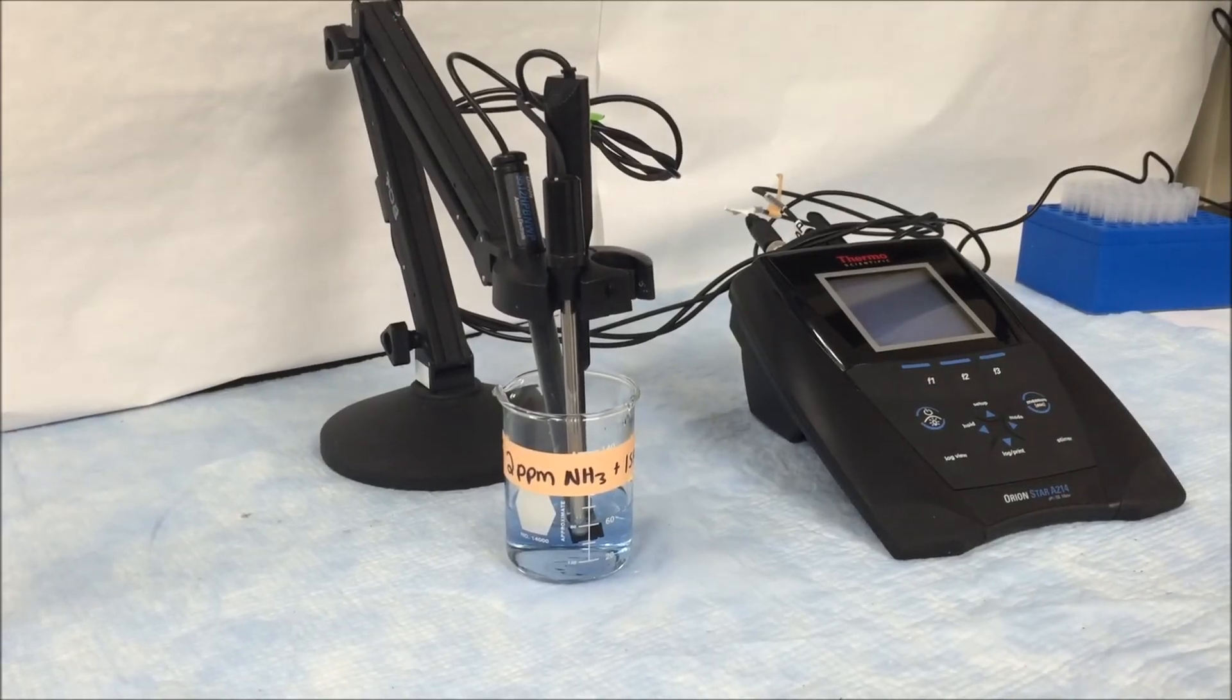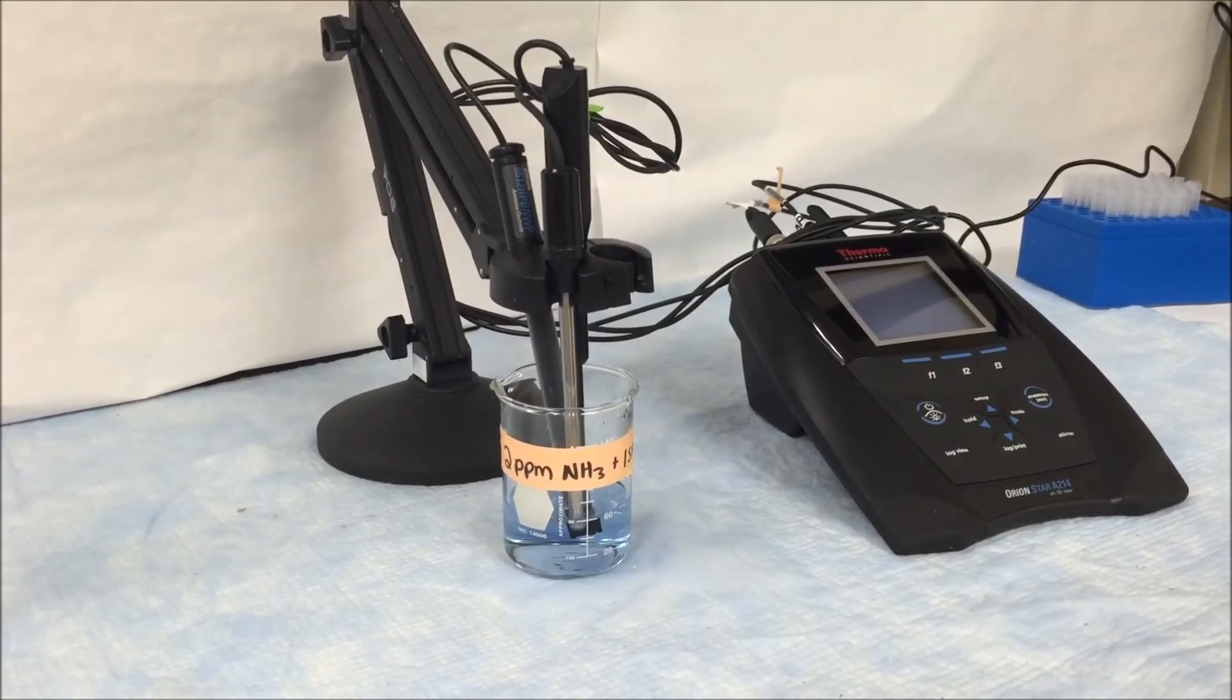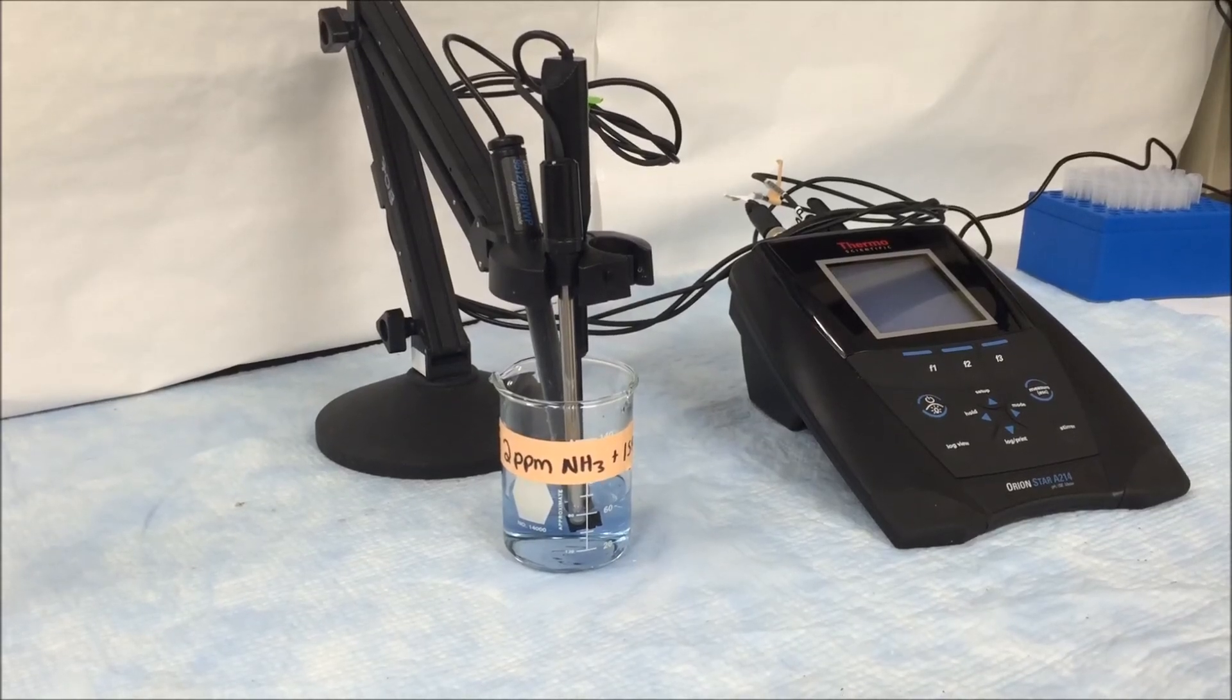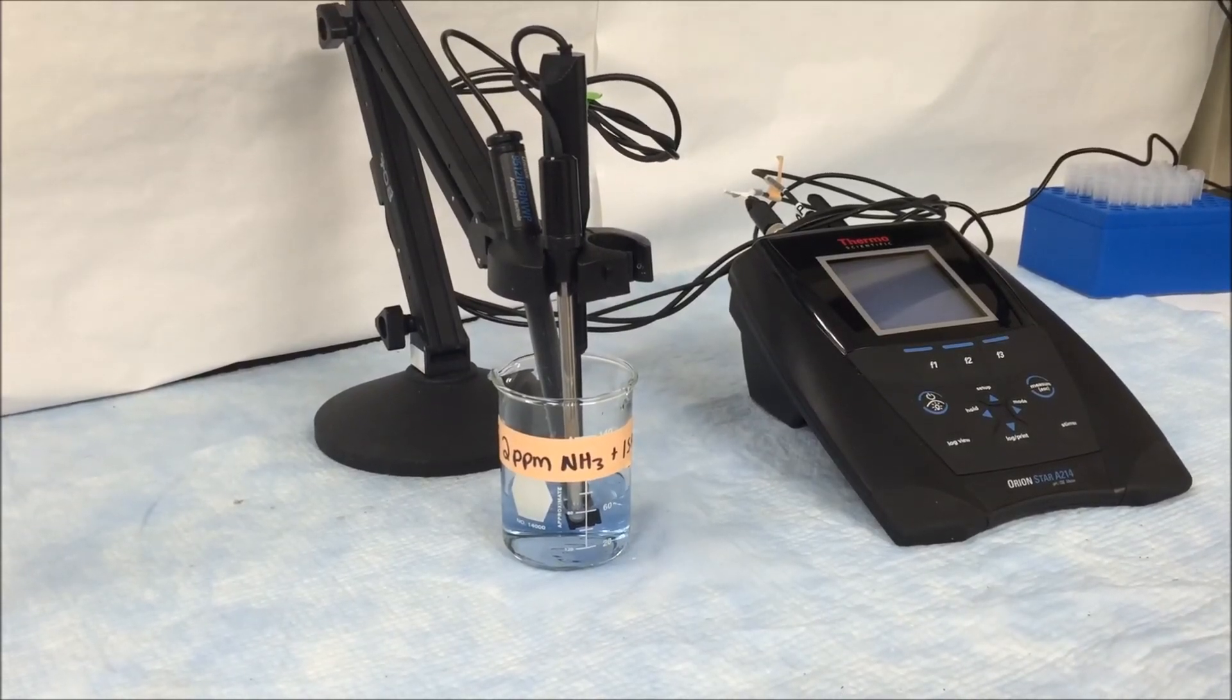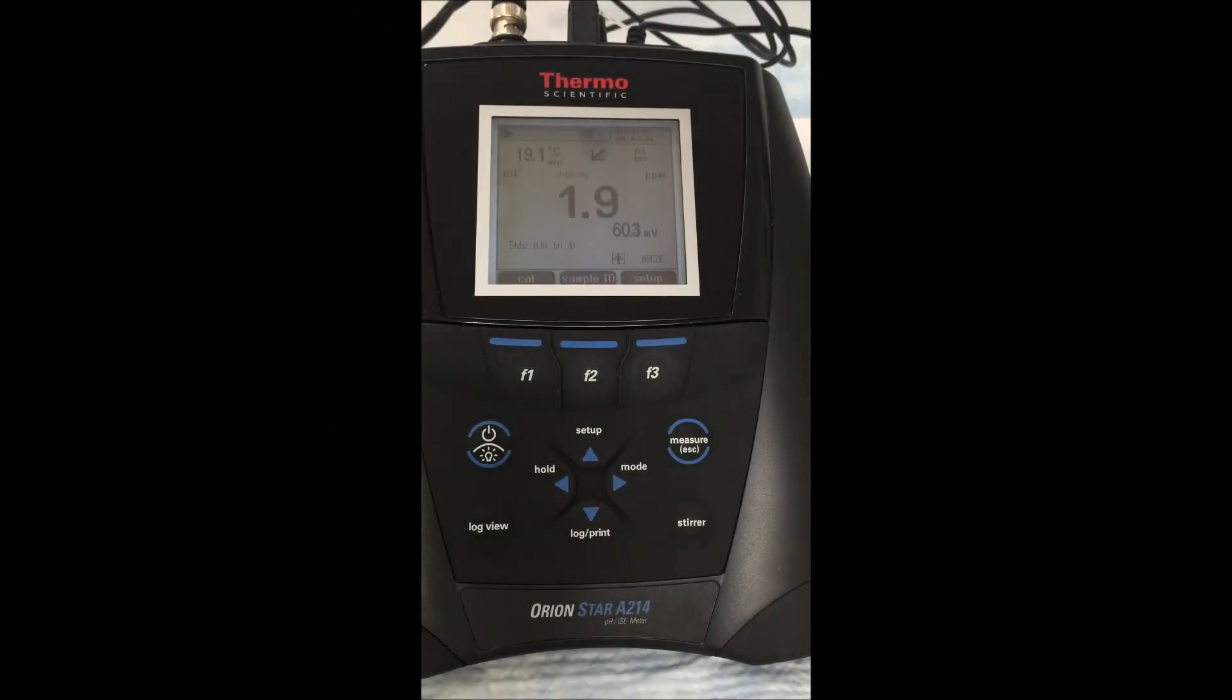Moving on to our check standard at 2 parts per million, we're going to verify that our calibration technique was successful. Waiting for the meter to finally register as ready, we see that our meter then reads back that check standard at 2 parts per million. If you have any other questions, feel free to contact us at Technical Service.